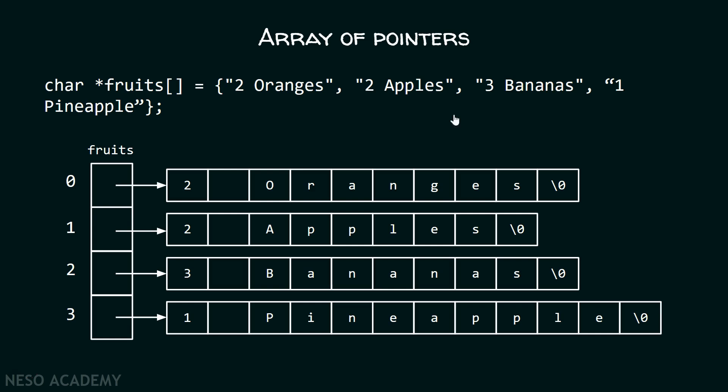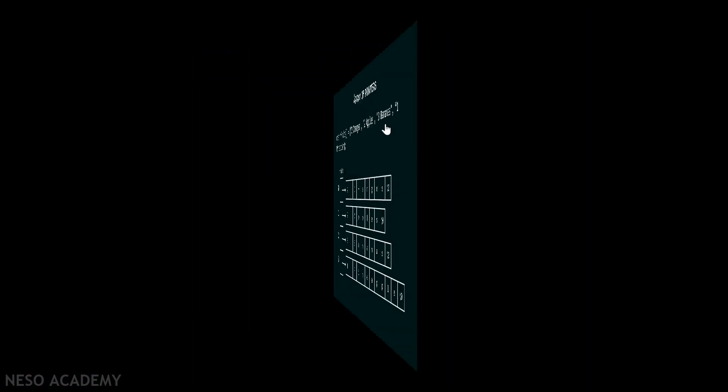This concept is very easy to understand. There is no need to maintain a two-dimensional array, where we have to specify the number of columns. There is no requirement of specifying the number of columns at all. We do have an alternative, which is an array of pointers. So, we can see the advantage of these pointers. They are very useful.